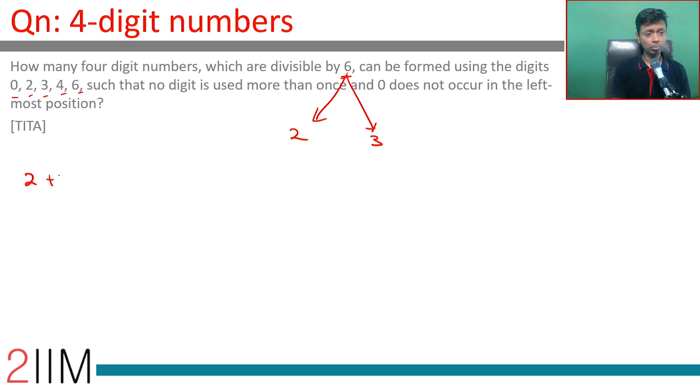Now 2 plus 3 plus 4 plus 6 plus 0. Added all the digits. 2 plus 3 is 5, 5 plus 4 is 9, 9 plus 6 is 15. This is 15. This is a multiple of 3, and all of this will be a multiple of 3. So if we drop something, then that should also be a multiple of 3.